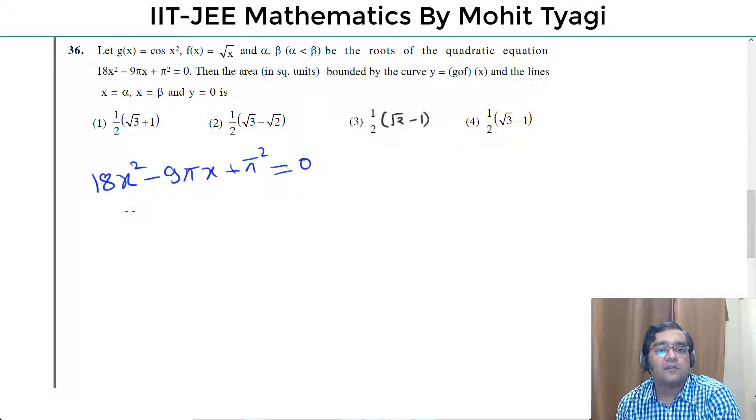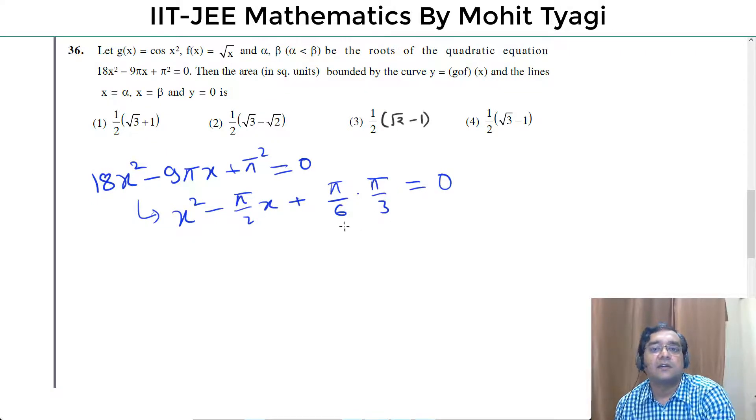So it's fairly simple. This is the root of x² - π/2x + π/6. The product of roots is π/6, π/3. The sum is π/2, so the roots are π/3 and π/6.